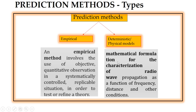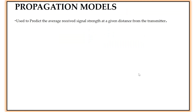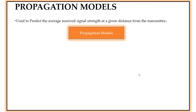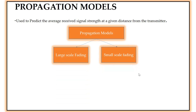What we want to do is predict the path loss. You want to get the received signal, write some formulas, and with the help of those formulas predict the values — that method is the deterministic method. The propagation model is used to predict the average received signal strength at a given distance from the transmitter, and it has been further classified into two types: large-scale fading and small-scale fading.